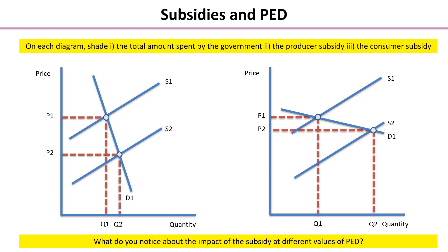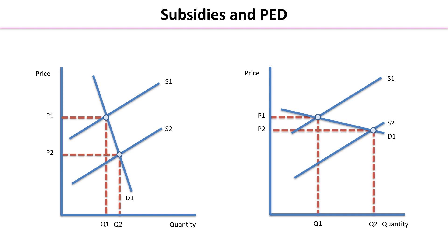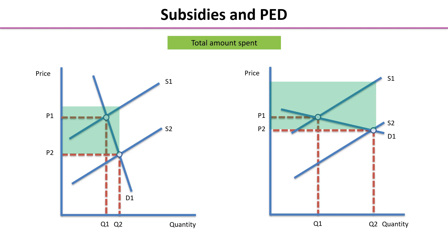What do you notice about the impact of the subsidy at different values for the price elasticity of demand? So first up, we've asked you to put on the total government spending on the subsidy. We know the new market equilibrium is Q2, and the subsidy per unit is the vertical distance between S1 and S2. If we take a line up from Q2 along S2 up to S1, the original supply curve, and then back to the price axis, we find the total spending by the government — that is, the subsidy per unit times Q2. We can see that in the price inelastic market, the total government spending is significantly less than in the price elastic market.